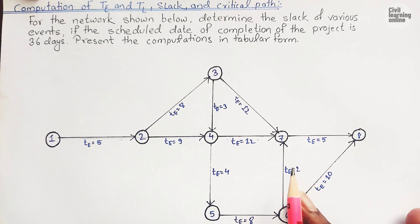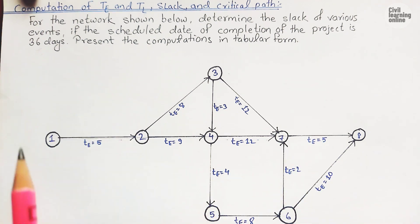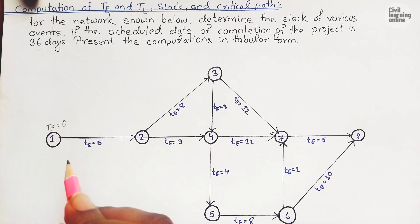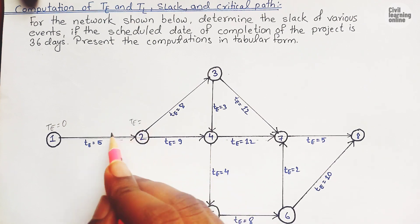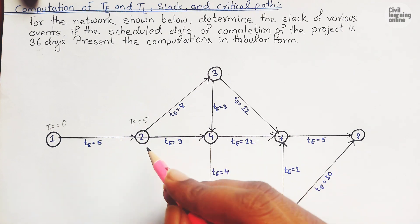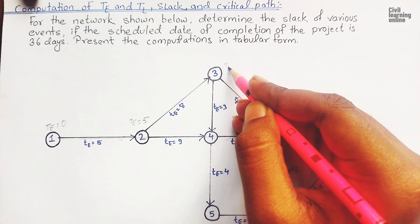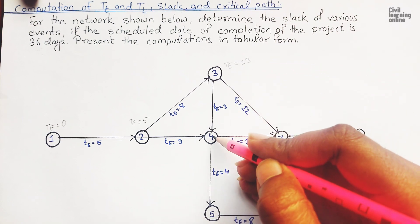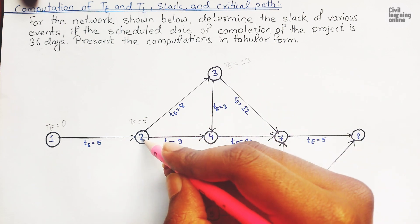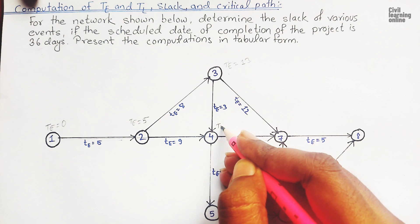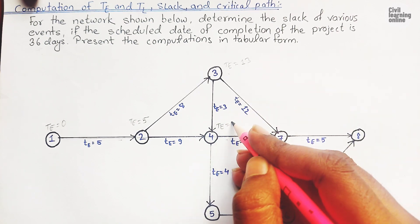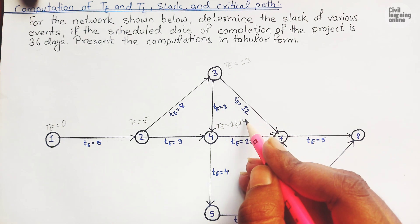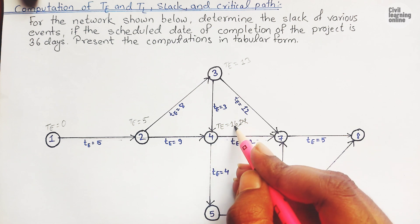Let's learn how to solve this type of numerical when we are provided with the value of TS. First we will calculate TE. TE of the first event, the initial event, will be taken as zero. TE of event two is zero plus five equals five. TE of event three is five plus eight equals thirteen. Event four has two predecessors, events two and three, so it will have two TE values. Thirteen plus three is sixteen, and five plus nine is fourteen. Maximum of these two is sixteen, so TE of event four is sixteen.